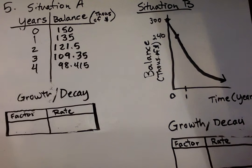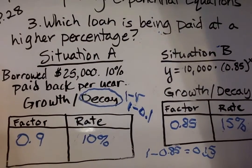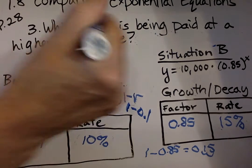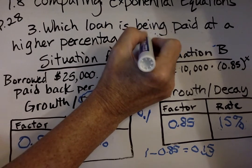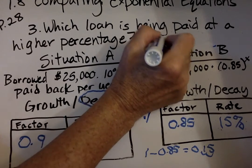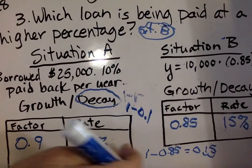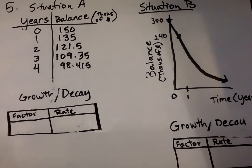We didn't put back here for number 3, which loan is being paid at a higher percentage? That would be situation B because it has 15%. This one has 10%.